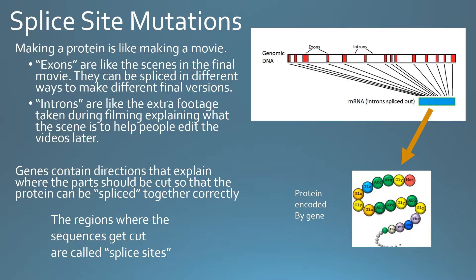Each scene from a movie is filmed separately and then after the entire movie has been filmed, it's edited and spliced together. Sometimes for a given movie you can have different versions — for example, a version on video with many extra scenes which weren't actually shown in theaters. Proteins are actually like that.